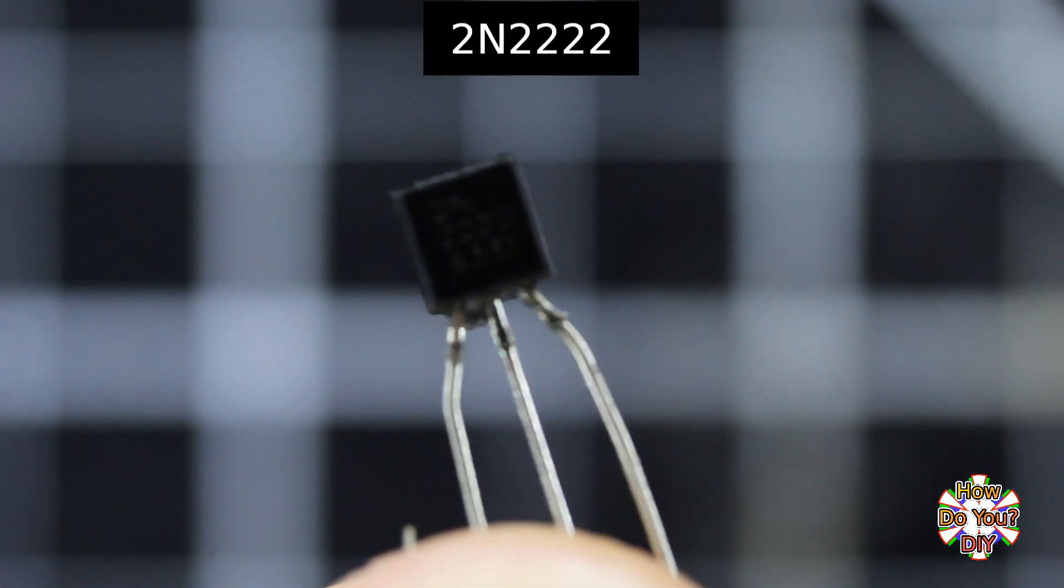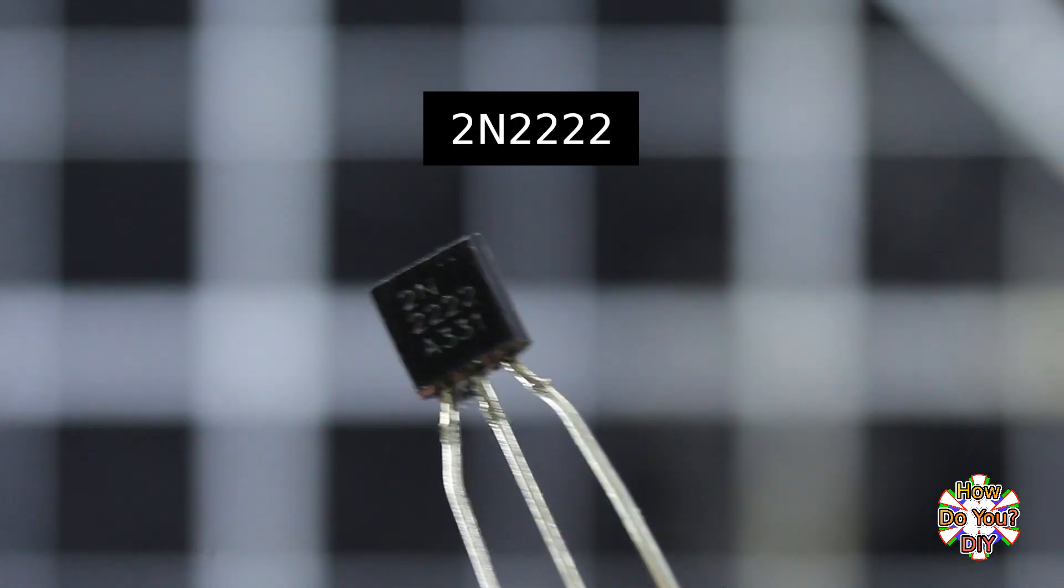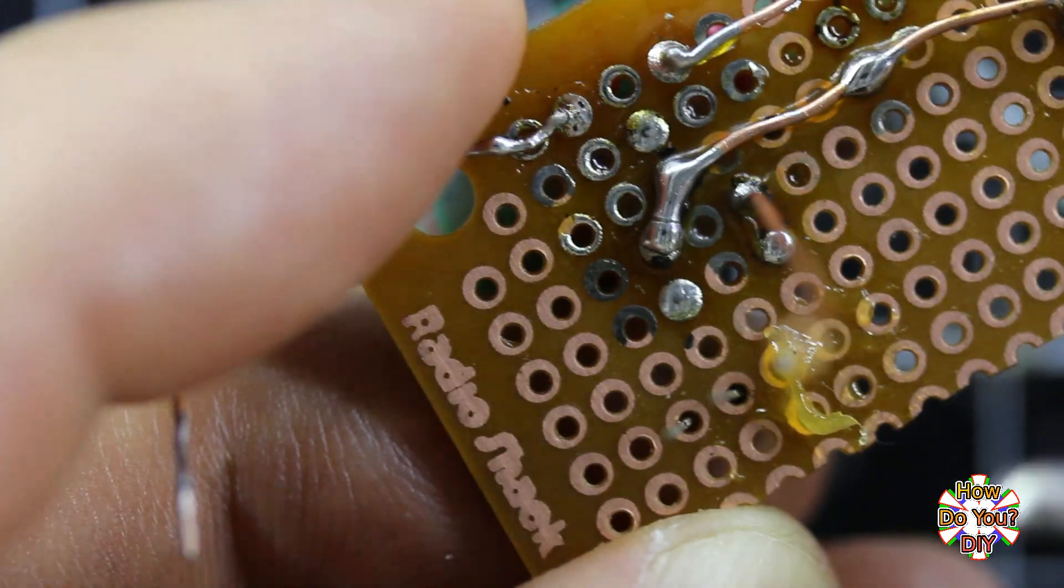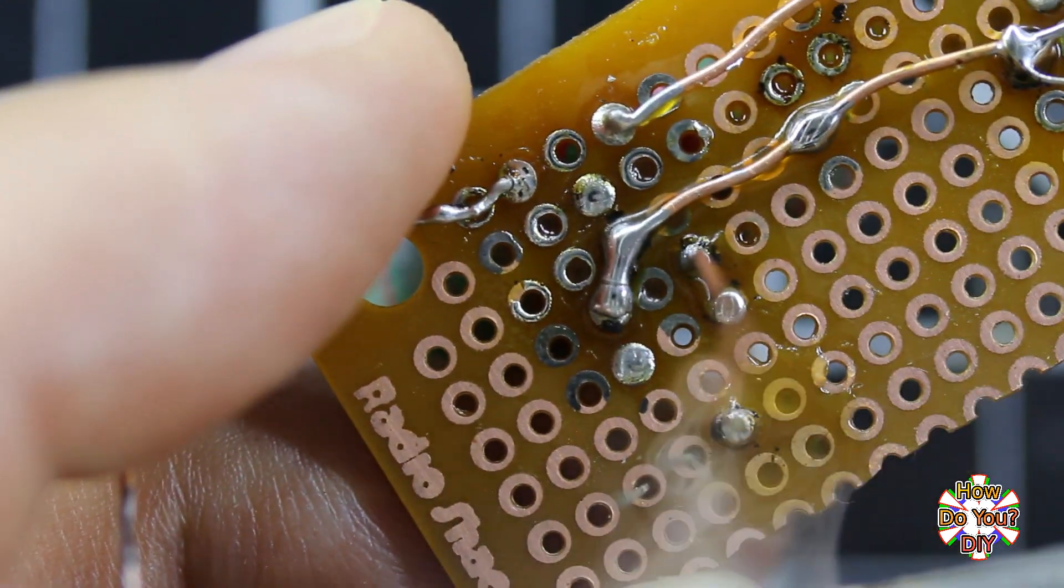The third part is this transistor. You could also use any of these other transistors. I place it on the perfboard with the flat side facing away from the toroid. For now, I'm just soldering one of the leads to hold it onto the board.